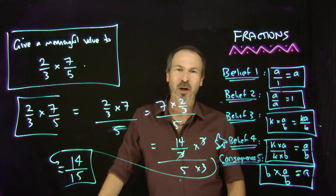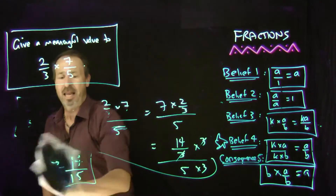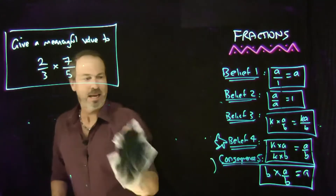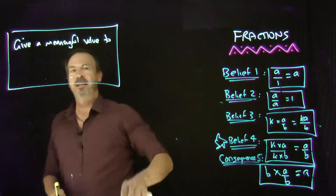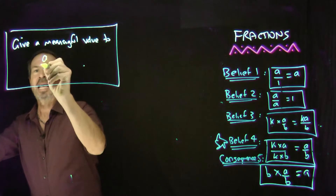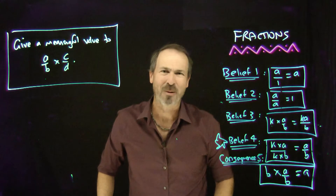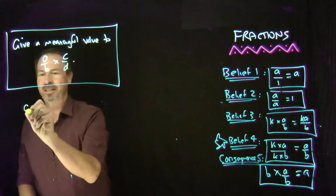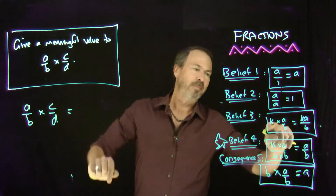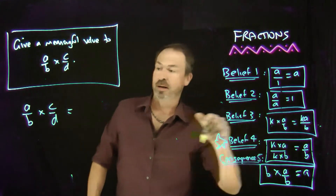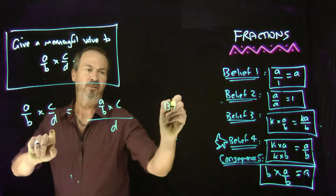Let me do that again, but in general fractions. Let's not make it two-thirds and seven-fifths exactly — let's now make it a-beths times c-dths. Can we copy what we just did abstractly? So a-beths times c-dths would be, by belief number three, something times a fraction is just adjust the numerator: a-beths times the numerator, all over the same denominator. That's belief number three.